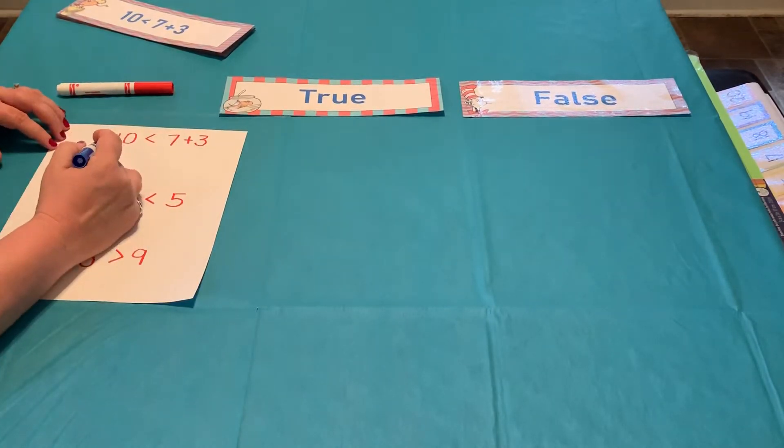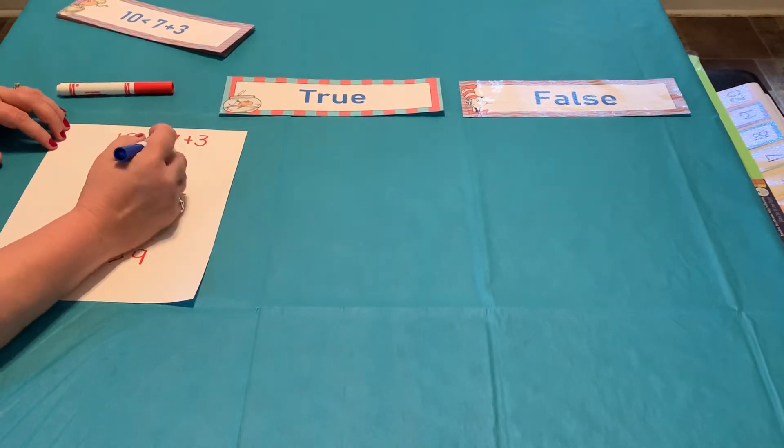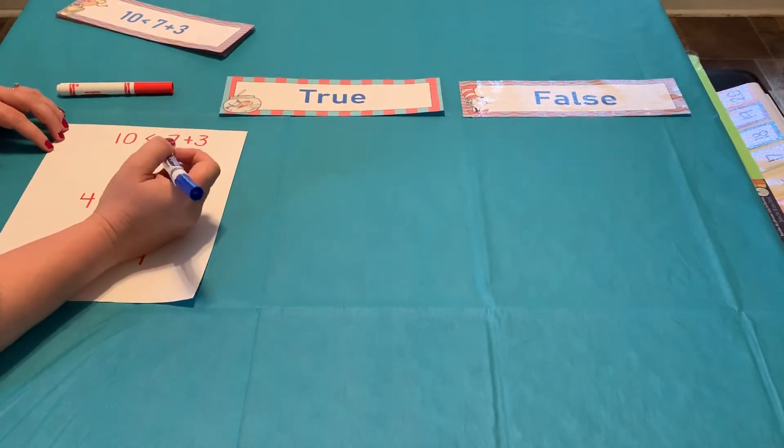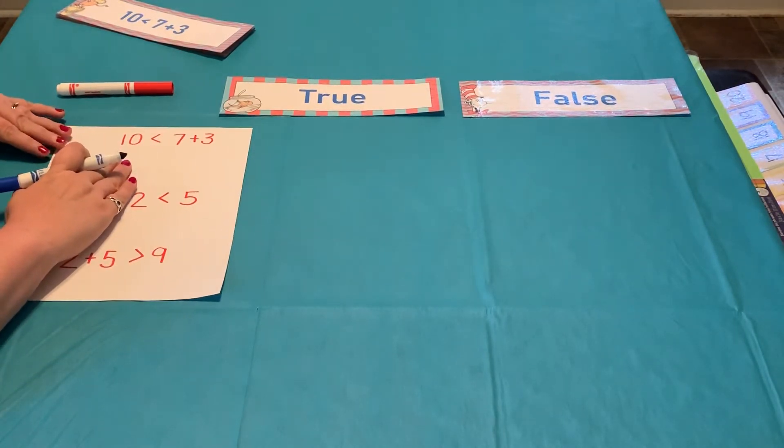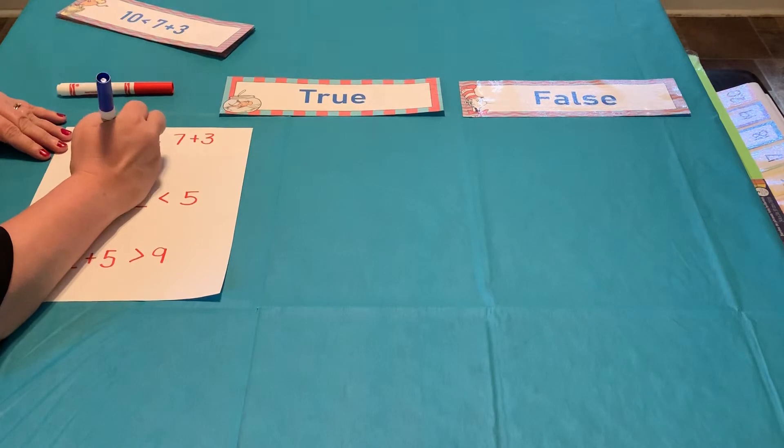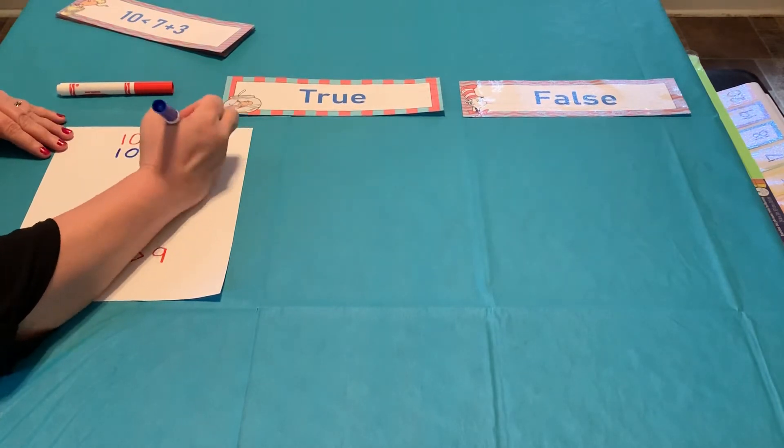Now, if we look at this statement, 10 is less than 7 plus 3. How can I solve this equation? I put my 10 down here, so that's the same as saying 10 is less than 7 plus 3. 7 plus 3, I know, is 10.